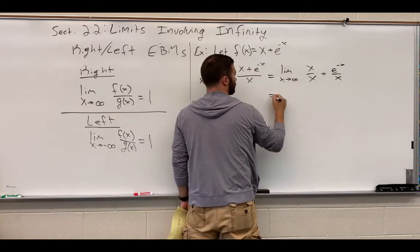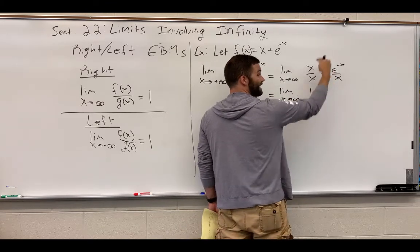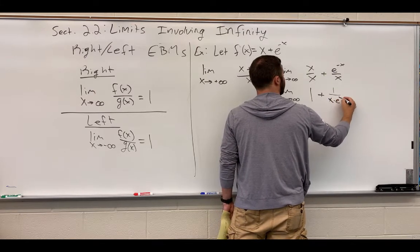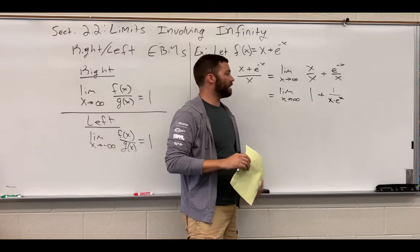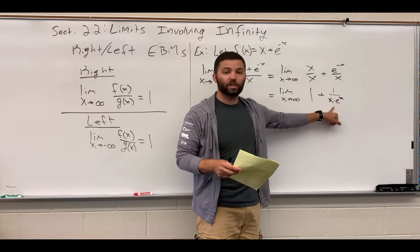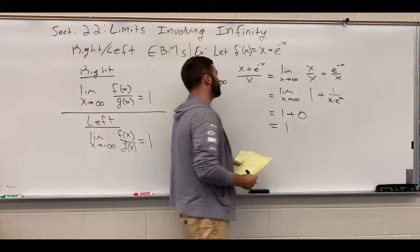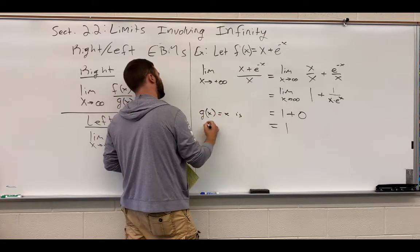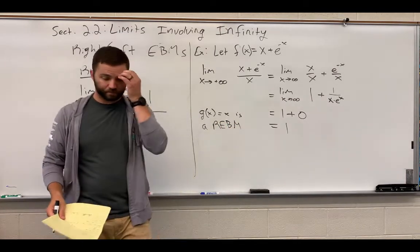This here is going to be 1 plus, and then I'm going to rewrite this. e to the negative x can be rewritten as 1 divided by x times e to the positive x. e to the negative x is the same as 1 over e to the x, so we can write that as a denominator. I evaluate the limit. Plug in infinity or large numbers of x, and you can see I'm going to get 1 divided by huge numbers, which is 0. So I'm going to end up with 1 plus 0, which is just equal to 1. Therefore, g(x) equals x is a right end-behavior model.